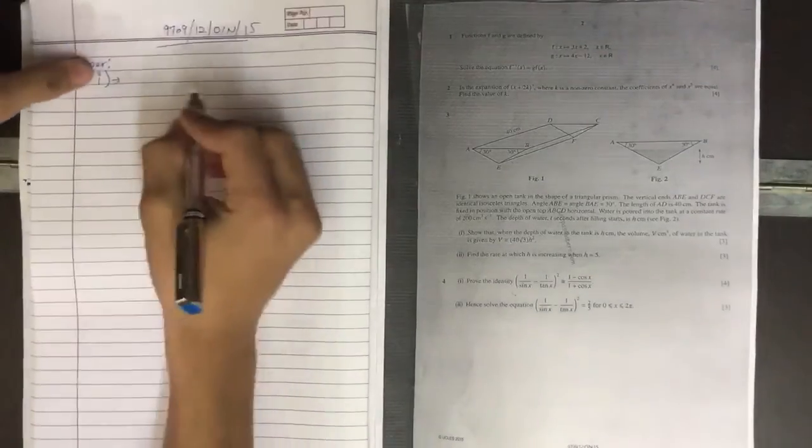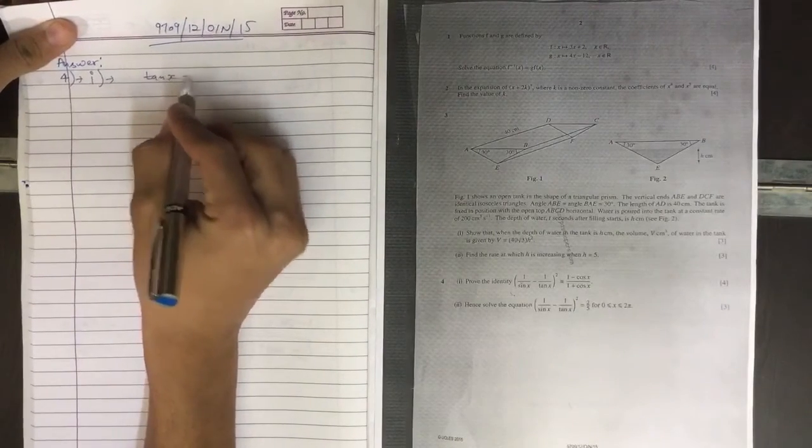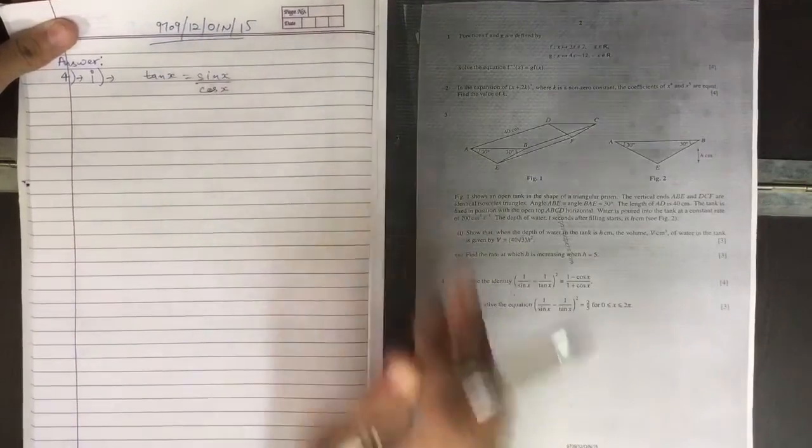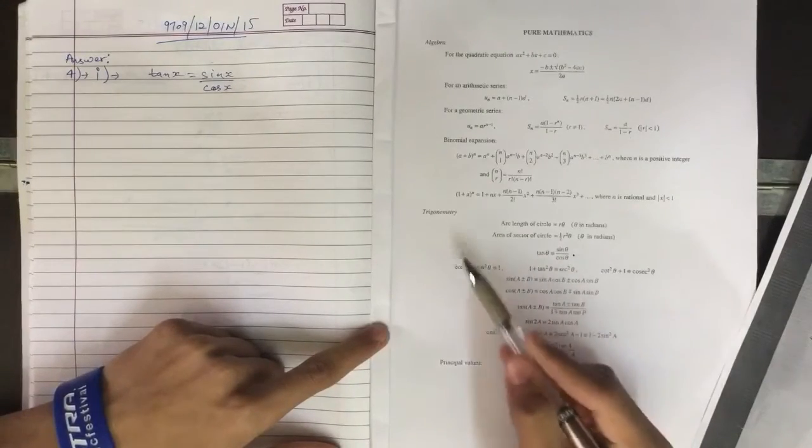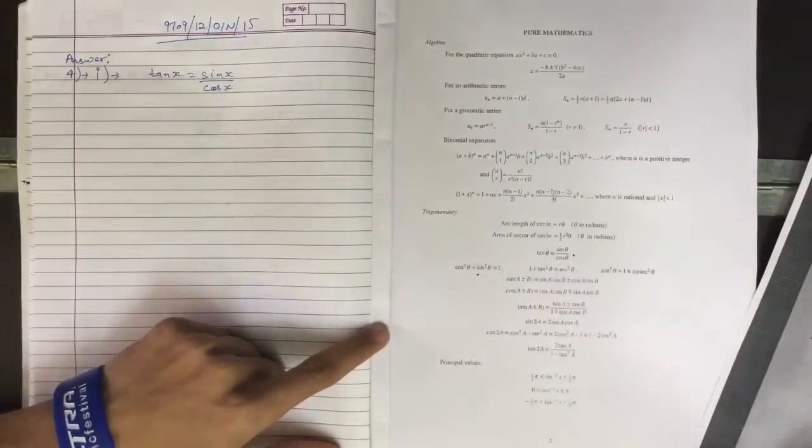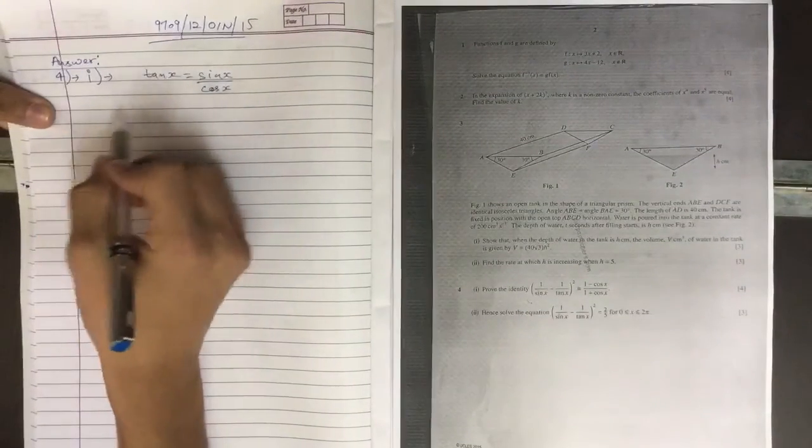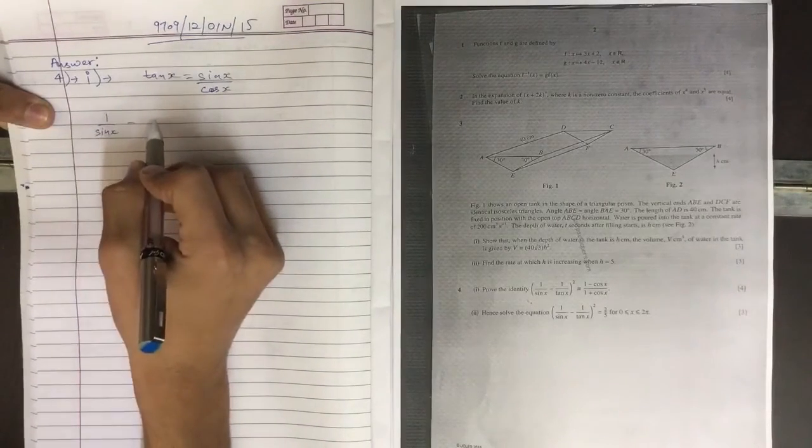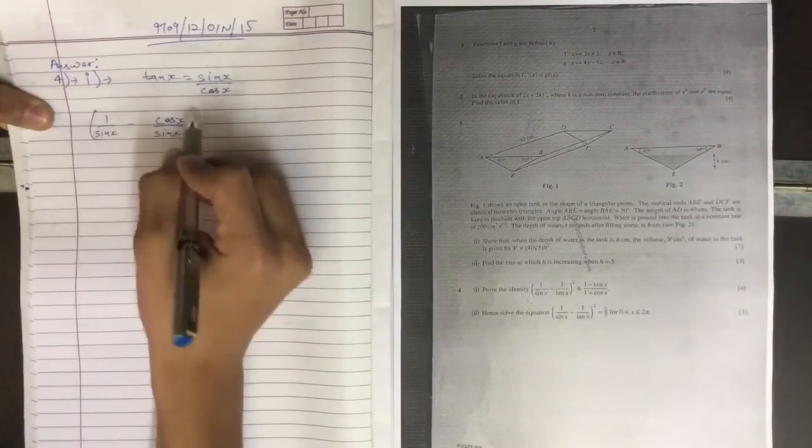We need to use the formula of tangent to remove it, and tangent formula is sin over cos. If you don't remember these formulas, you can refer to MF9 which you get in A levels. There are formulas for trigonometry and all that stuff. Let's substitute this value into the given equation and we get (cos x over sin x) to the whole squared.